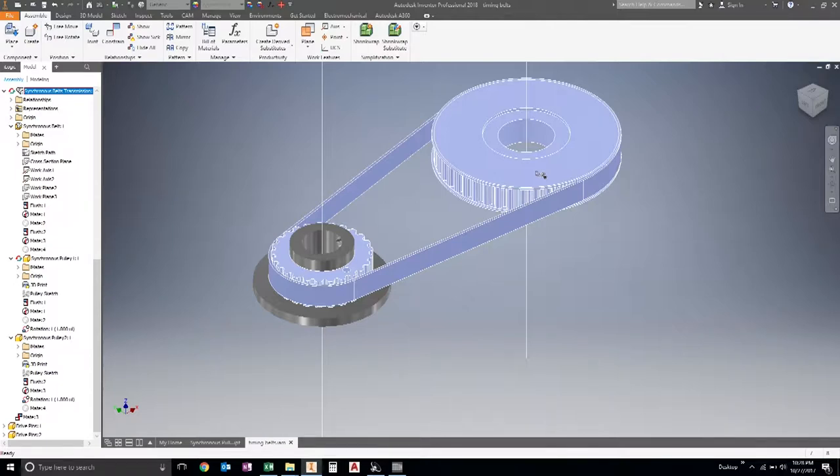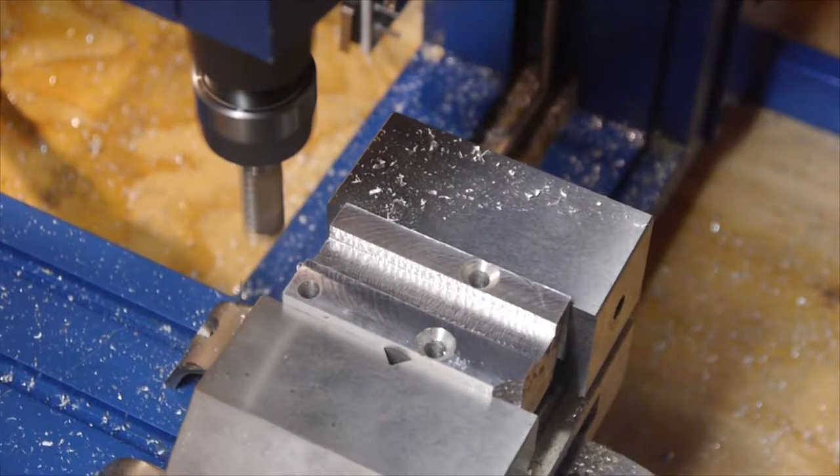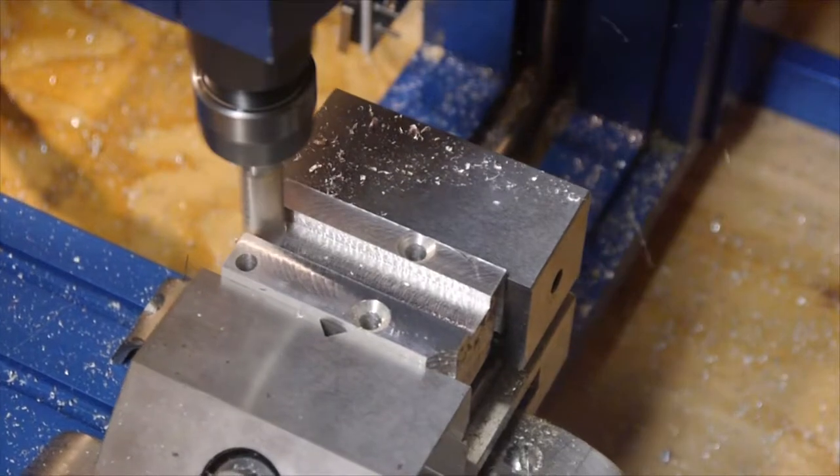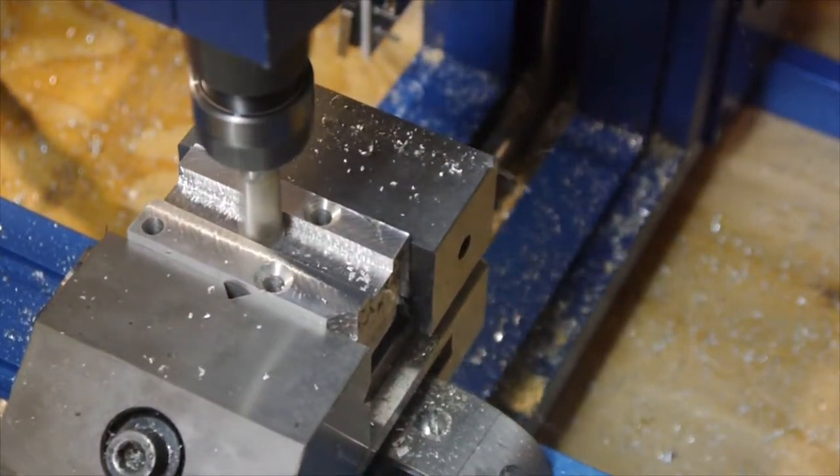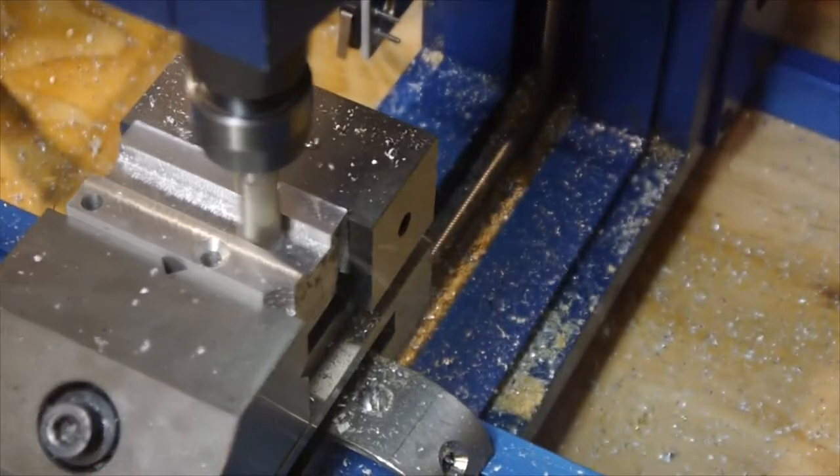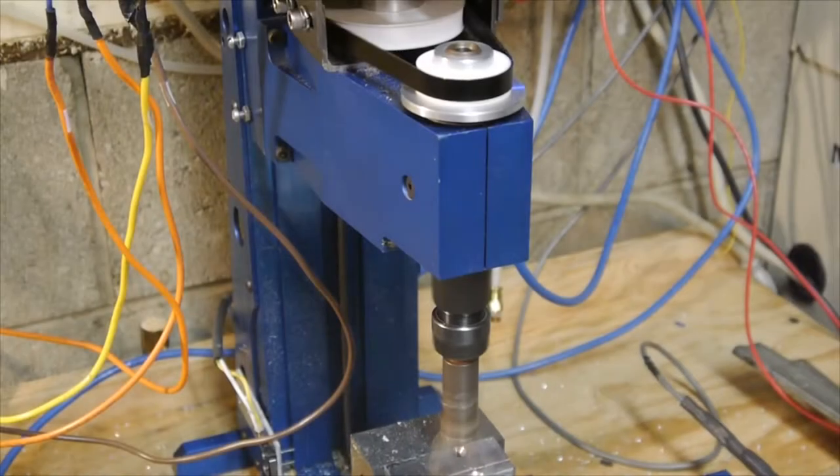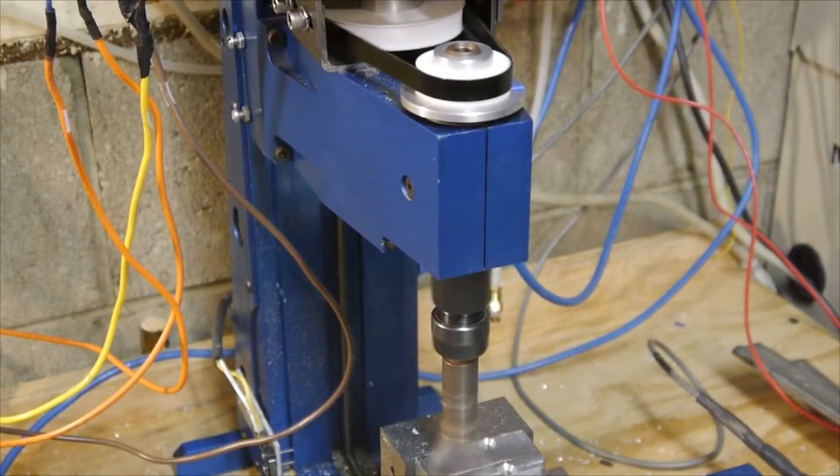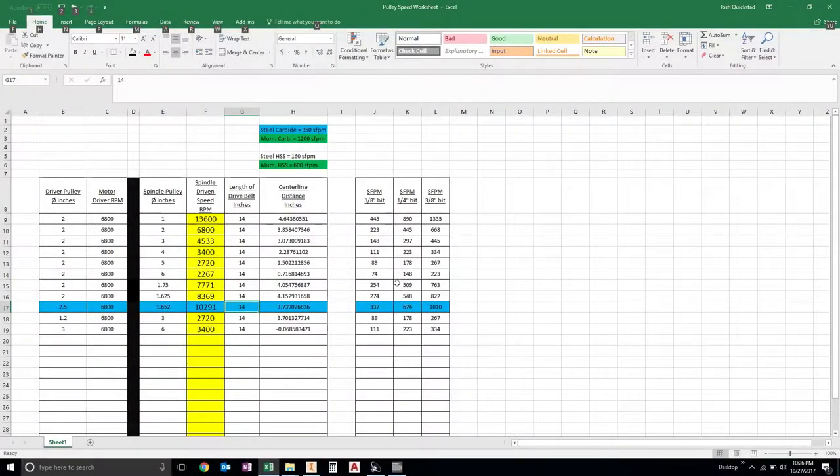Now witness the firepower of this fully armed and operational mill. Hey, welcome back to the internet. If you're watching this video, perhaps you're curious if a 3D printed pulley is going to work on a small mini mill like mine, a MaxNC CNC. Well, we're going to find out.